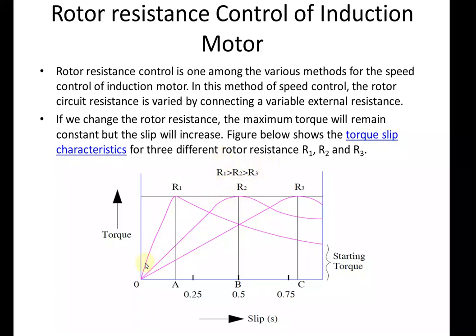It can also be noted that from the torque-slip characteristics, the starting torque increases with increase in rotor resistance — as rotor resistance increases, starting torque also increases. Since R1 is the greatest, the starting torque is highest at R1. Therefore, this method is advantageous where high starting torque is required, and there are many applications where we can use rotor resistance control of slip ring induction motors for this purpose.